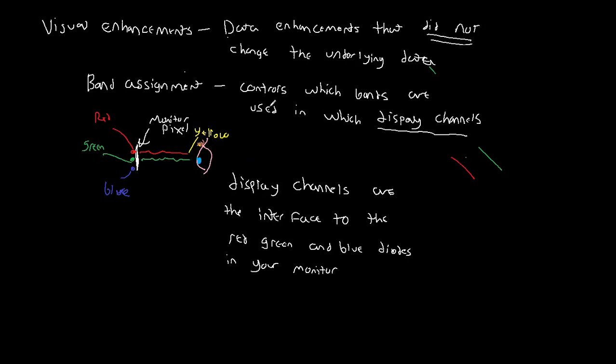But basically, when we're talking about band assignment, we're talking about which wavelength region are we going to use to drive the red that is emitted from your monitor. Which wavelength are we going to use that controls the green that is emitted from your monitor?